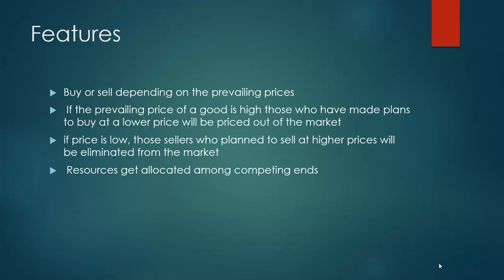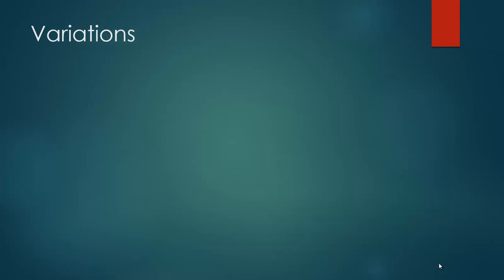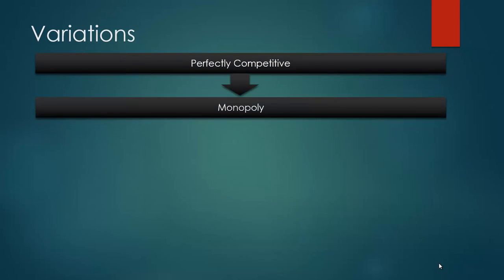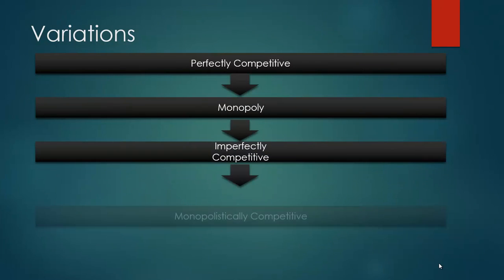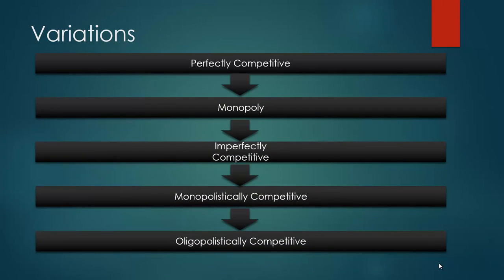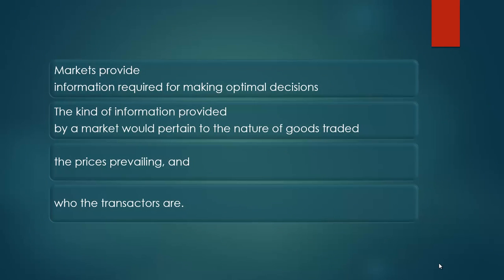In a market-based economy, it is through the market that resources get allocated among competing ends. Markets in economics vary from perfectly competitive, to monopoly, to imperfectly competitive, to monopolistically competitive, to oligopolistically competitive. The existence of markets provides efficiency in the use of resources.